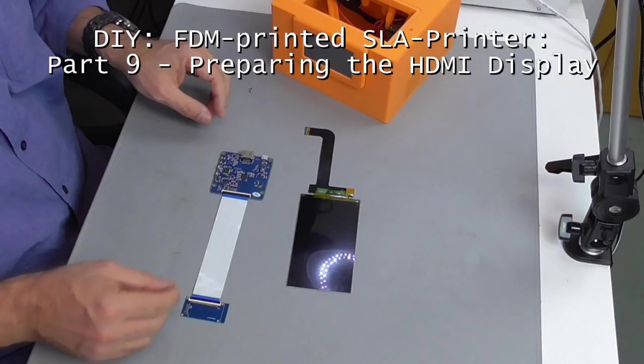Hello and welcome to one more episode of the FDM printed SLA printer. This time we have a look on the HDMI display, which type exactly do you need, what components come with it and how it needs to be prepared to get used with an SLA printer.